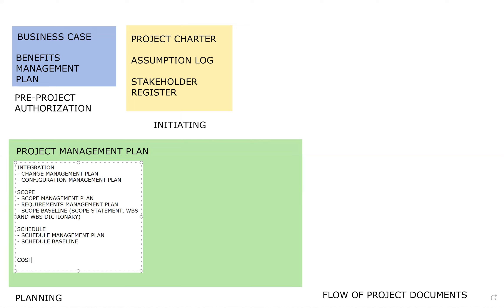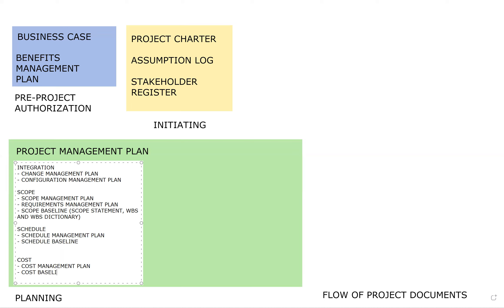Next we have cost. Again, we have a cost management plan and then we have a cost baseline. The cost baseline is your snapshot of the approved budget — it contains all of the projected costs, the estimates for the tasks, and the contingency amounts. It does not contain management reserves, though. So you've got to keep that in mind.